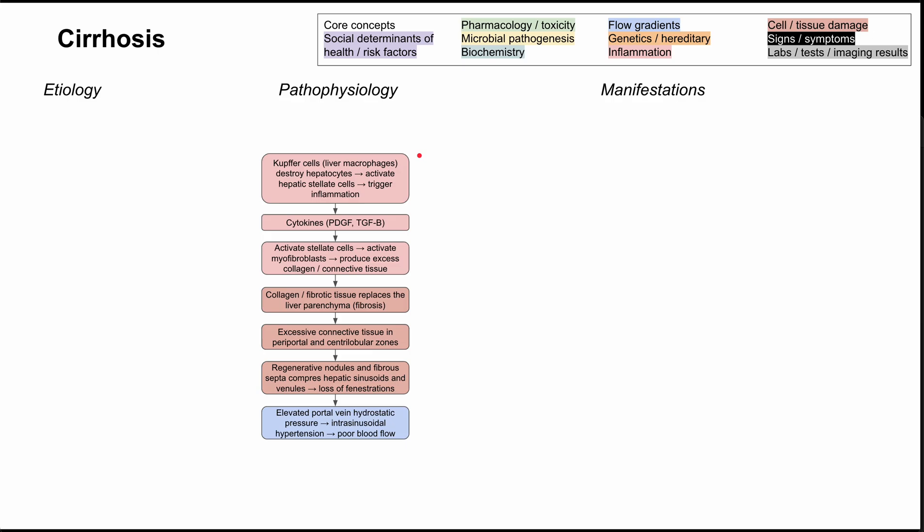That downstream inflammation triggers the release of many cytokines like platelet-derived growth factor and TGF-beta, and that in turn causes even more inflammation and more stellate cells, which then activate myofibroblasts. Myofibroblasts are cells that produce collagen and connective tissue, and because you have so many of them, you end up with excess collagen and excess connective tissue.